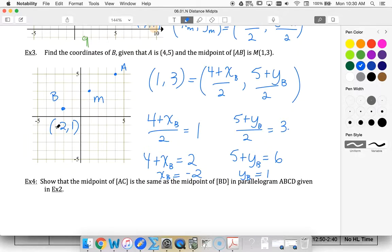That tells me that B has an x coordinate of -2, a y coordinate of 1, which is also what we figured out using logic.